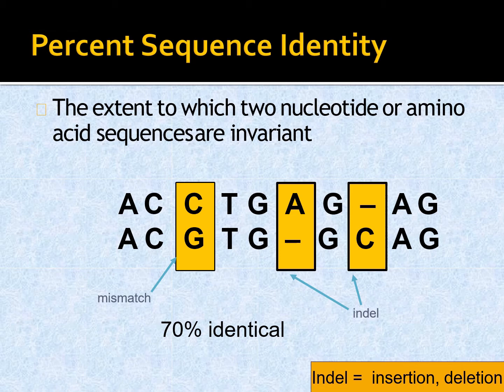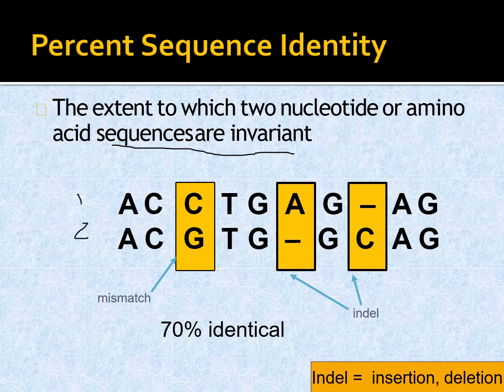Before moving into the grid of alignment theories, let's start with the basics. Percent sequence identity is the extent to which two nucleotide or amino acid sequences are invariant. Given two sequences, we need to find the alignment score, and we determine this with the help of percent sequence identity.